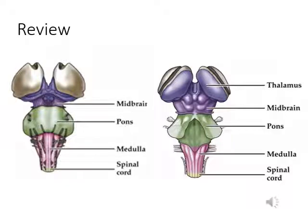This picture is just to remind you of the gross anatomy of the brainstem. The left picture shows you the ventral side of the brainstem and the right picture shows you the dorsal side. The three parts of the brainstem are labeled in different colors: the purple upper part is the midbrain, the middle green part is the pons, and the pink part is the medulla. You can see some cranial nerves come out from the ventral side and one pair comes out from the dorsal side.